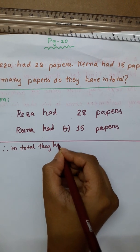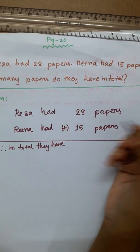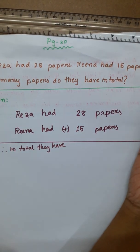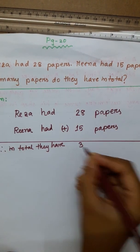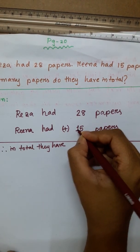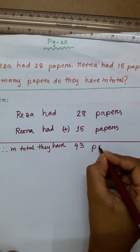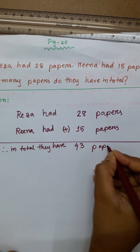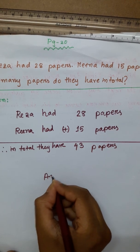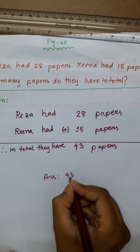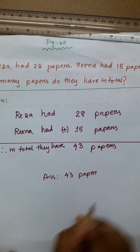In total, 8 and 5: 9, 10, 11, 12, 13. And 2 plus 2 is 4. So the answer is 43 papers.